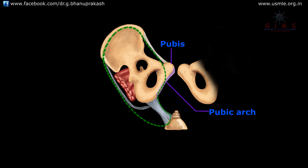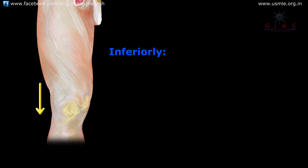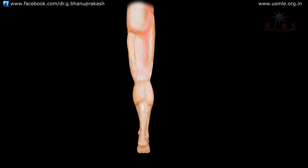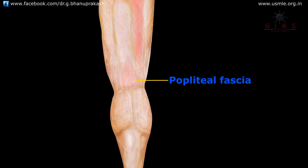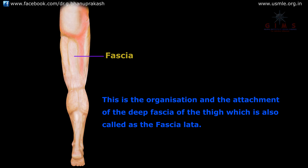Medially, the fascia lata is attached to the pubis, the pubic arch, and the ischial tuberosity. These are the superior attachments. Inferiorly, it gives attachment on the front and sides of the knee, where it is attached to the subcutaneous bony prominences and the capsule of the knee joint. Posteriorly it forms the strong popliteal fascia, which continues below with the fascia of the back of the leg.